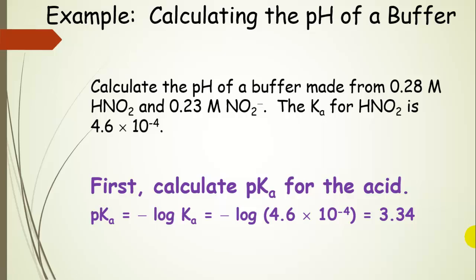So the first thing that we're going to do is calculate the pKa for the acid. So remember, just take the negative log of the Ka and you're going to get the pKa, which is going to be 3.34.